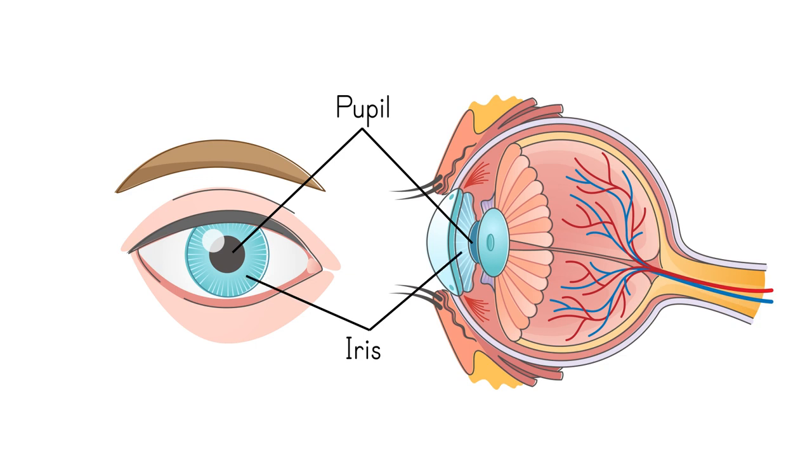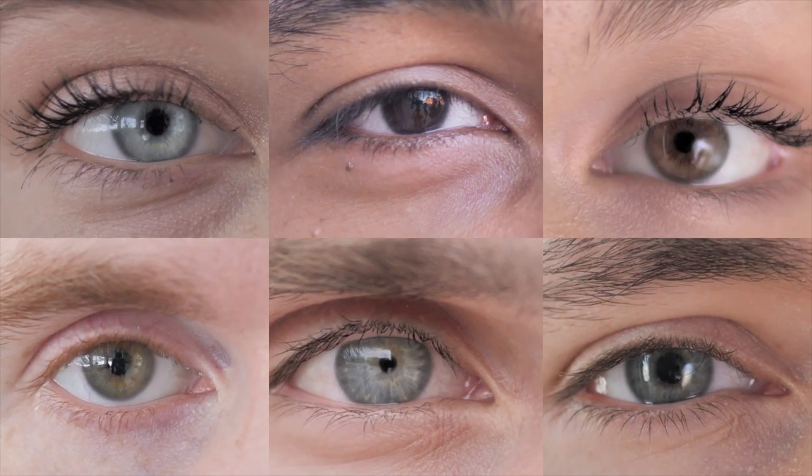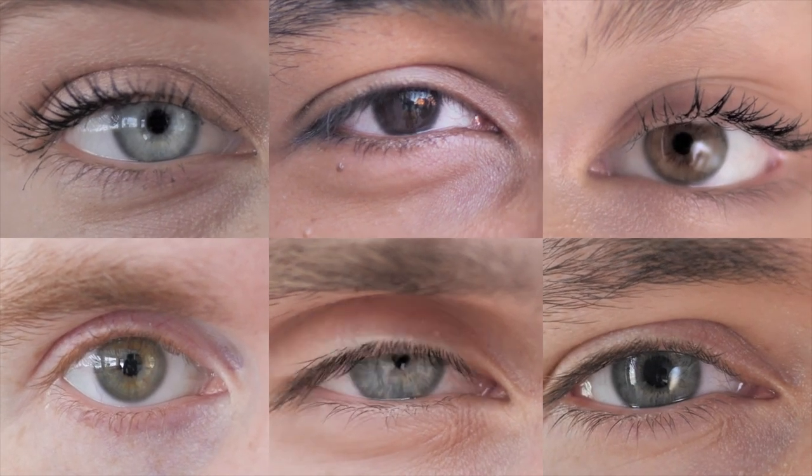If someone asks what color your eyes are, they're really asking about the color of your iris. The color of your iris is determined by genetics and about 80% of people worldwide have brown eyes.